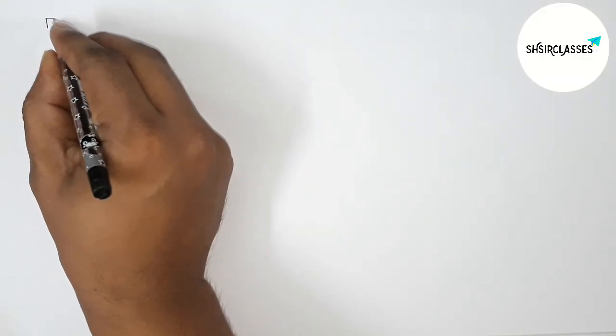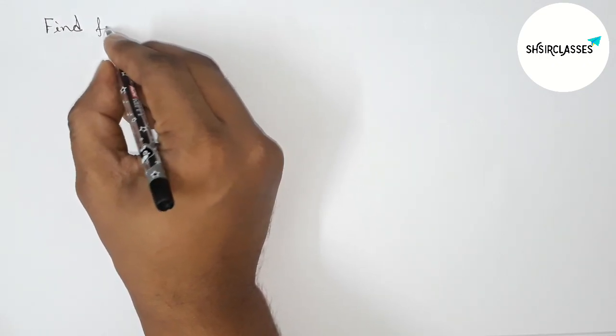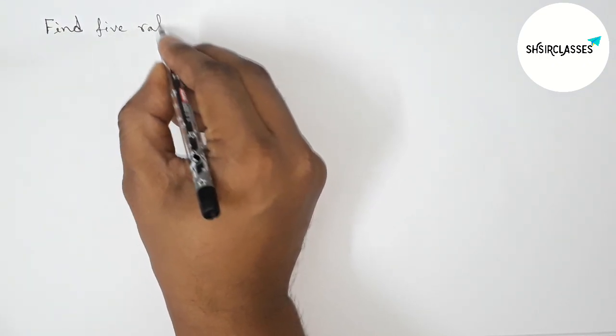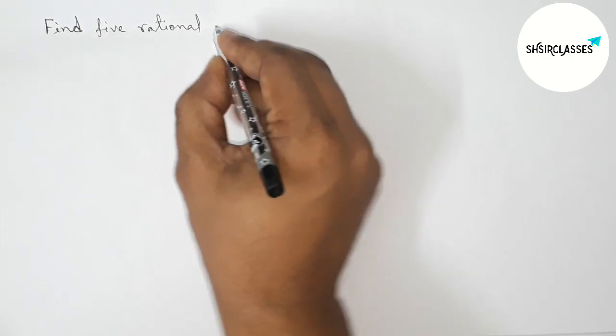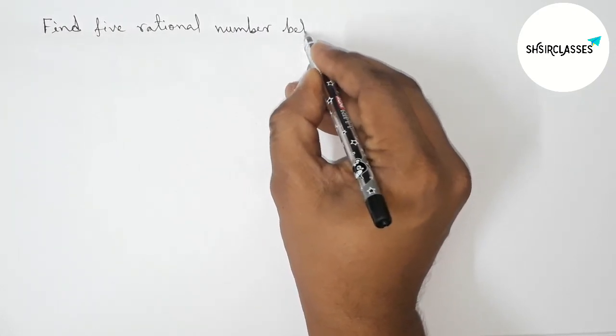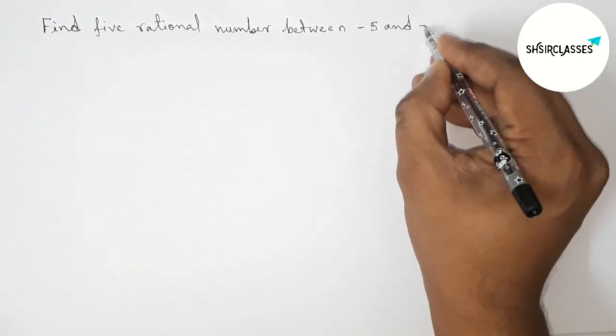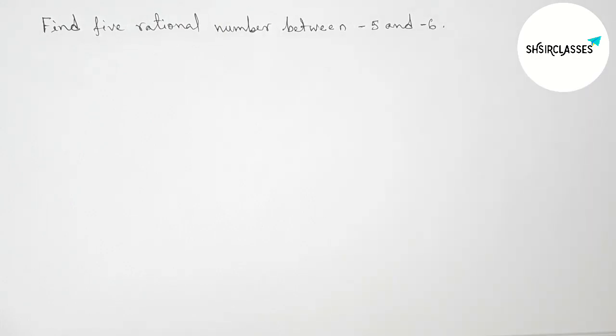Hi everyone, welcome to Si Share Classes. Today in this video we have to find 5 rational numbers between minus 5 and minus 6 in an easy way. Please watch the video till the end. Let's start the video.